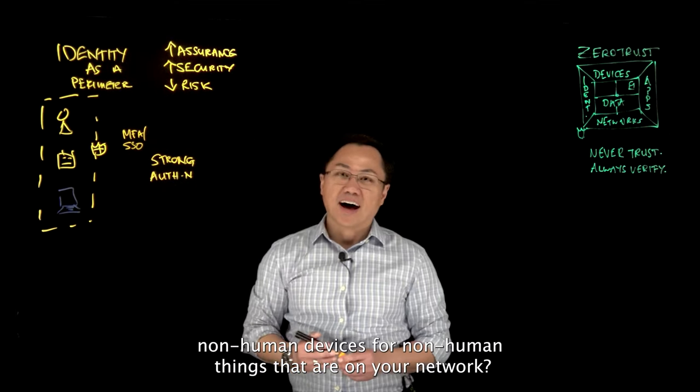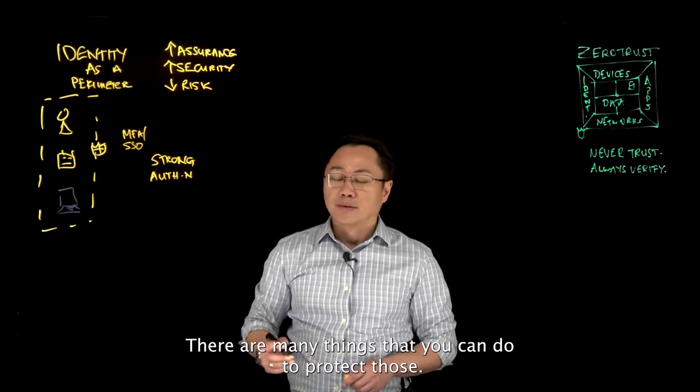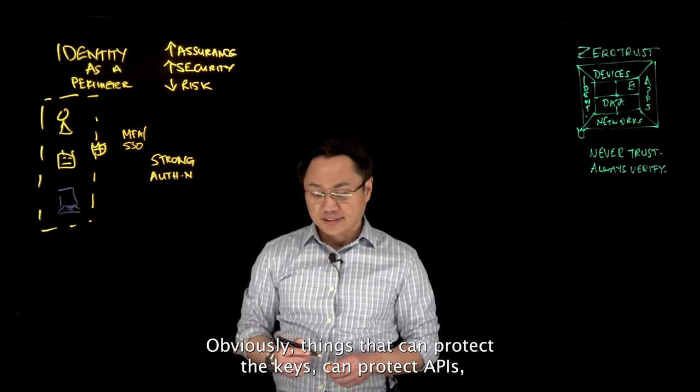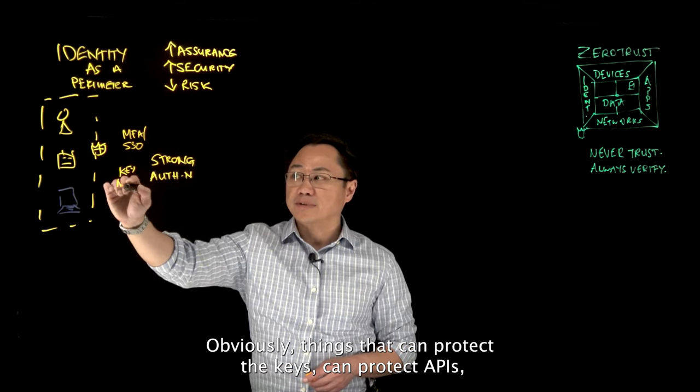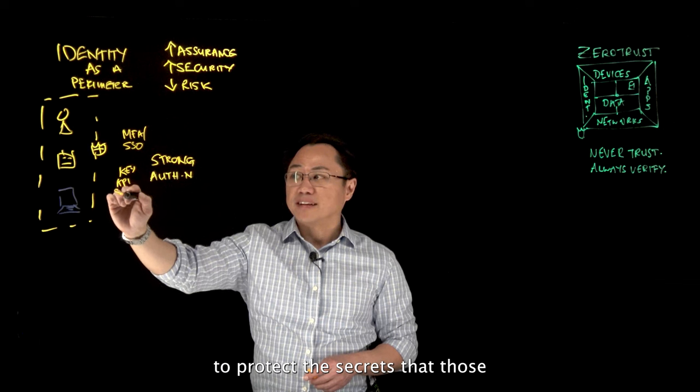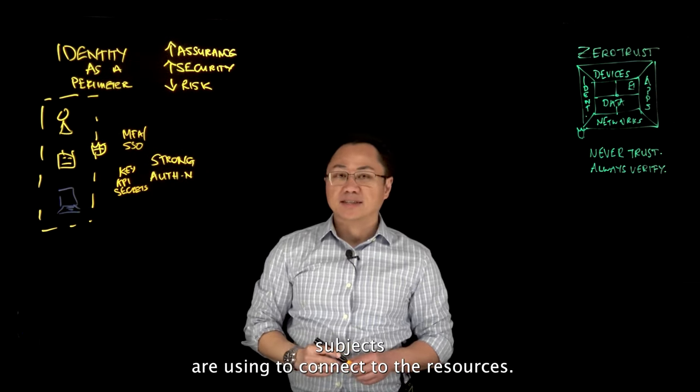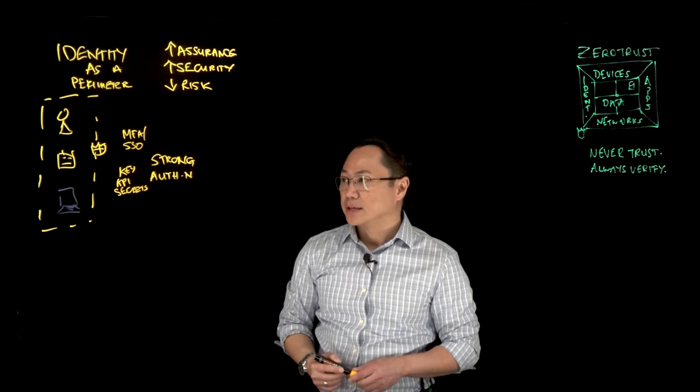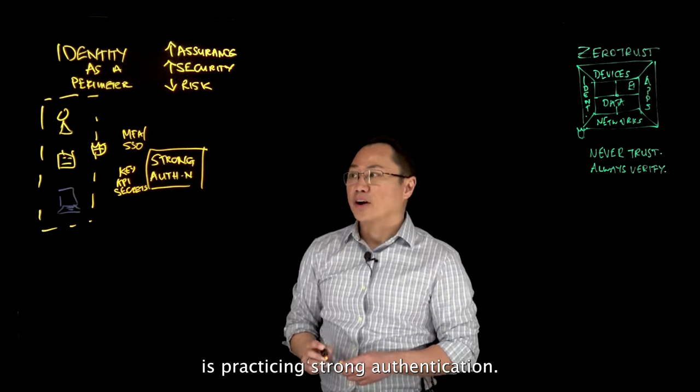Now, what about these non-human devices or non-human things that are on your network? There are many things that you can do to protect those, obviously. Things that can protect the keys, can protect APIs, to protect the secrets that those subjects are using to connect to the resources. So the first principle is practicing strong authentication.